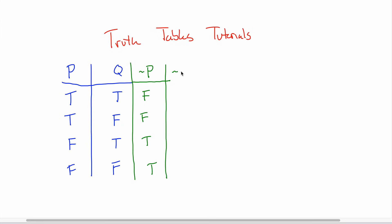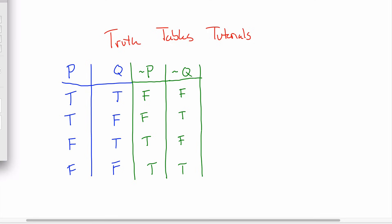Similarly, not Q only has to do with Q and not anything to do with P. So if I want to figure out not Q, all I have to do is look at the Q column and write down the opposite. I see a T, I'll write an F. I see an F, I'll write a T. I see a T, I'll write an F. I see an F, I write a T. And so that's relatively straightforward. When these get harder is when you start combining these things.